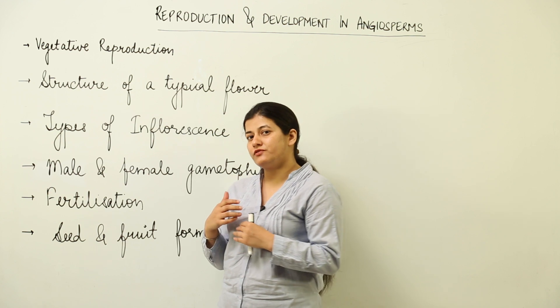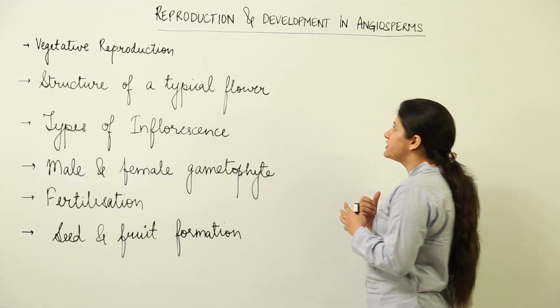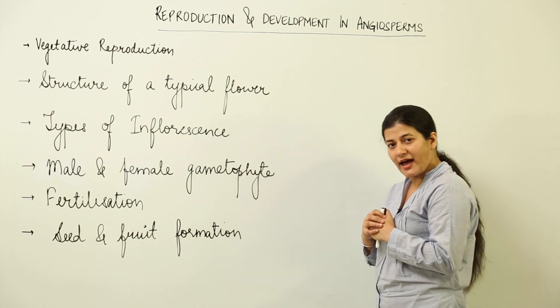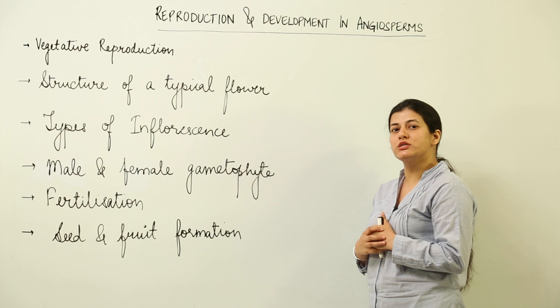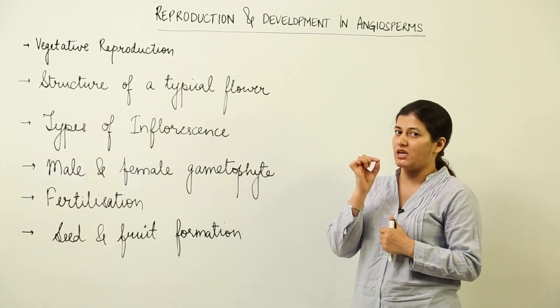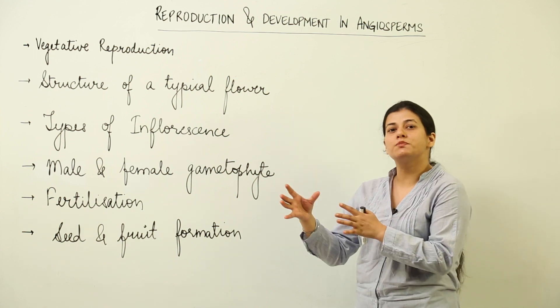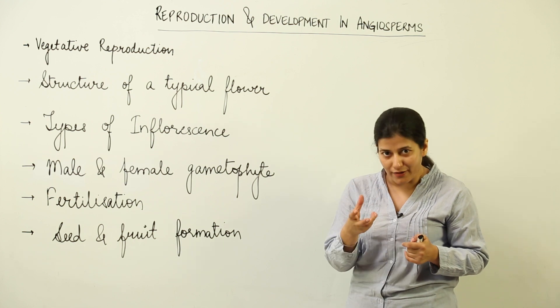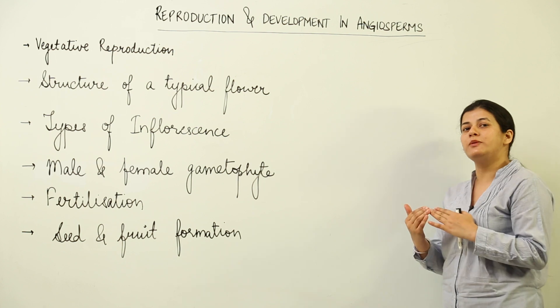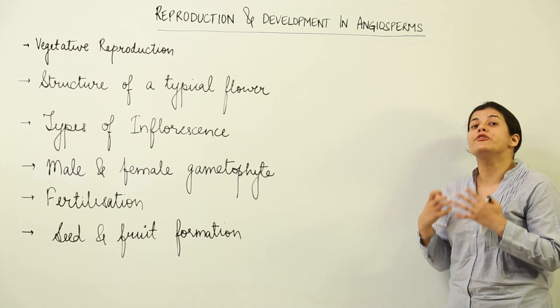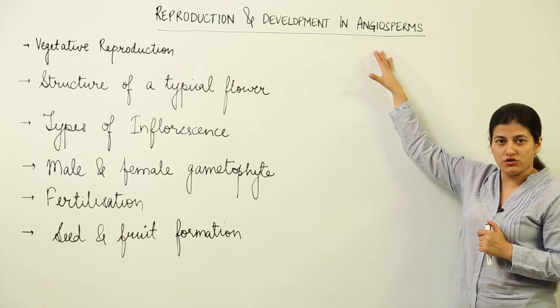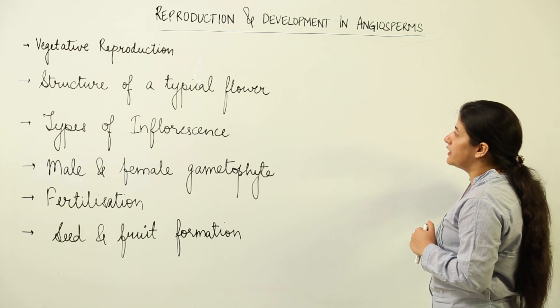Recall your knowledge from the previous class, class 11, where we studied that there are five different divisions in the plant kingdom and the most advanced one was angiosperms. In angiosperms, the most characteristic feature that distinguishes them from other kinds of plants is the flower. So what we are going to see in this chapter is how do those plants which bear flowers reproduce.